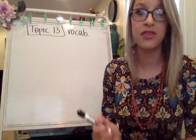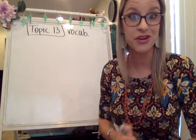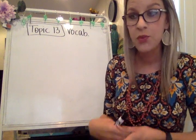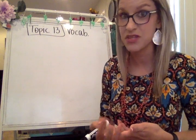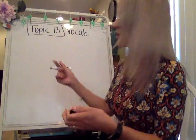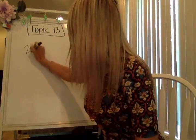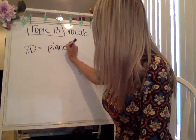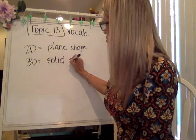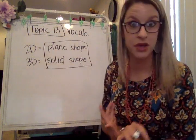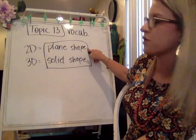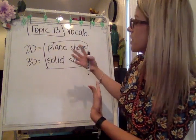We're going to start with talking about the vocabulary you're going to see coming up in Topic 13 in our Envision Math. The first couple of things I want you to know: we're going to be discussing different types of shapes. We're going to be talking about plane shapes, which is essentially the same thing as two-dimensional shapes. We're also going to be discussing three-dimensional shapes, which have a new name called solid shapes. So a 2D shape is the same as a plane shape, and a 3D shape is the same as a solid shape. This is the way we're going to be referring to them during this chapter.